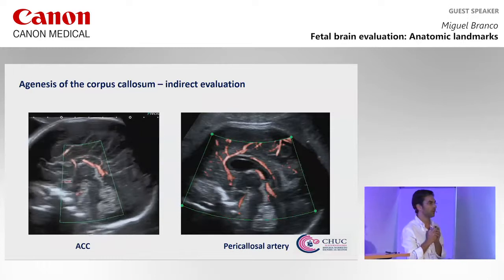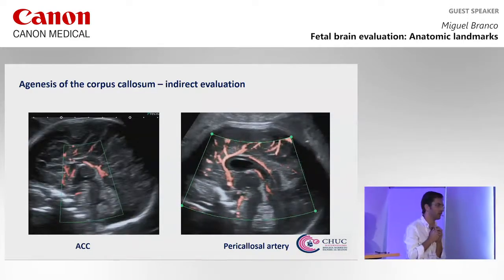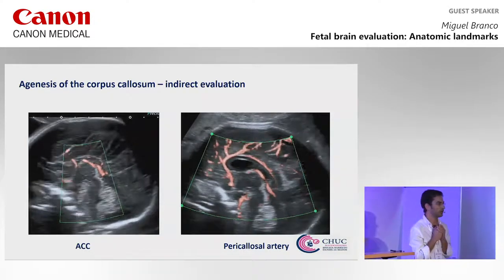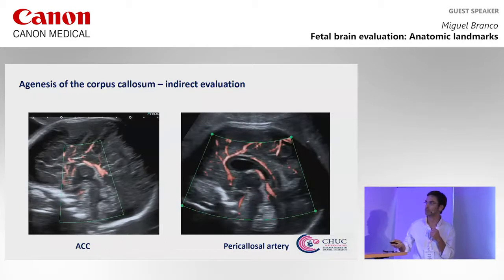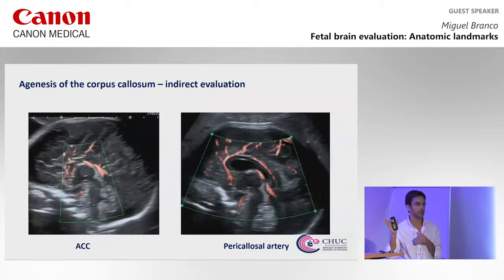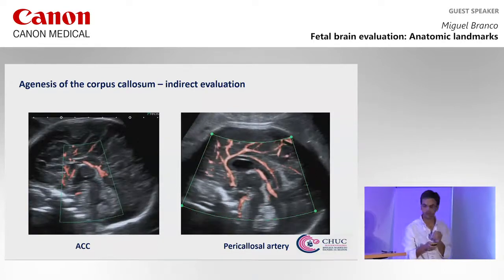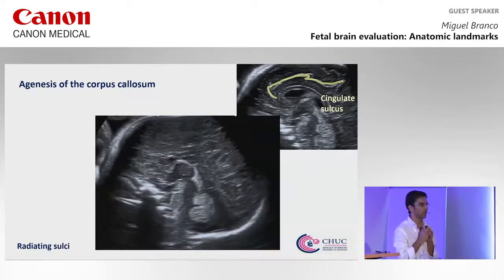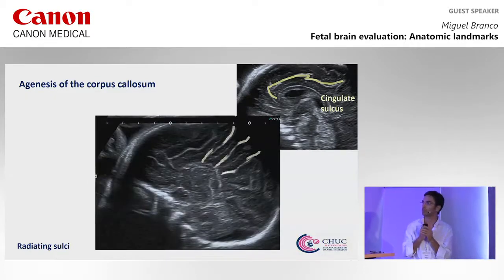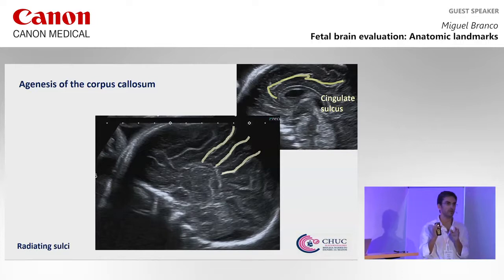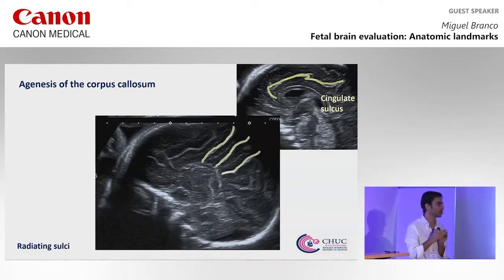We can use Doppler interrogation, but it's not really critical for this diagnosis. In complete agenesis, the anterior cerebral artery fails to form the loop to the pericallosal artery. It is more interesting to see the intracerebral veins and the veins of Galen using SMI, which is a low-velocity Doppler. Also on late-term gestation we have this typical pattern of sulcal dislocation that goes from the roof of the third ventricle radiating to the exterior — very typical of complete agenesis of the corpus callosum — but that doesn't change the prognosis.